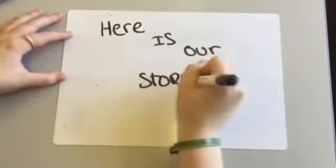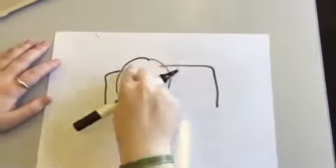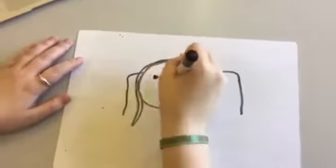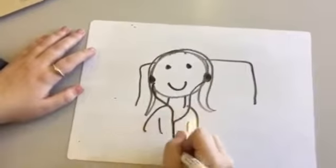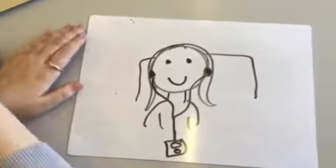Here is our storyboard we created for our trailer. First shot we're going to have a mid shot of a girl sitting in the back of a car, which is going to be our main character. She's listening to music and she's in the car because she's moving to a new house.